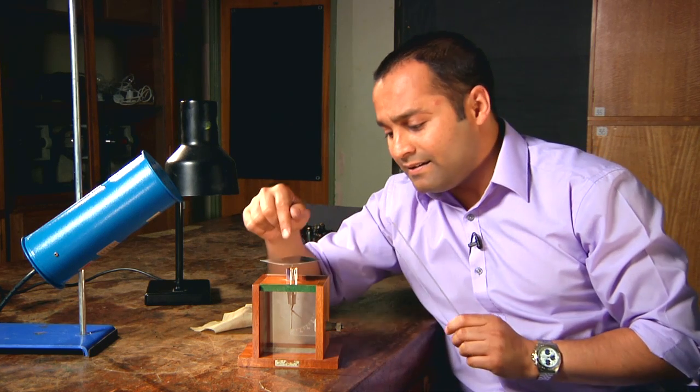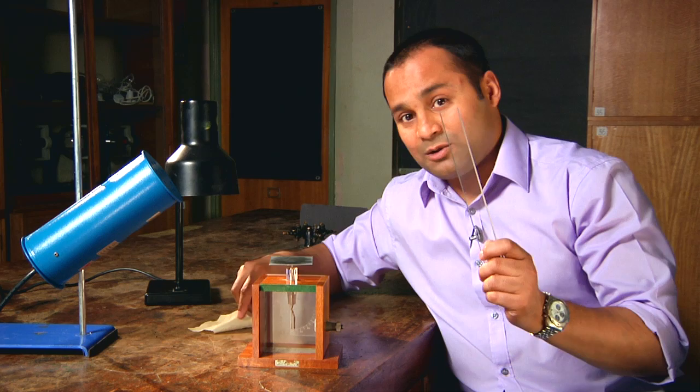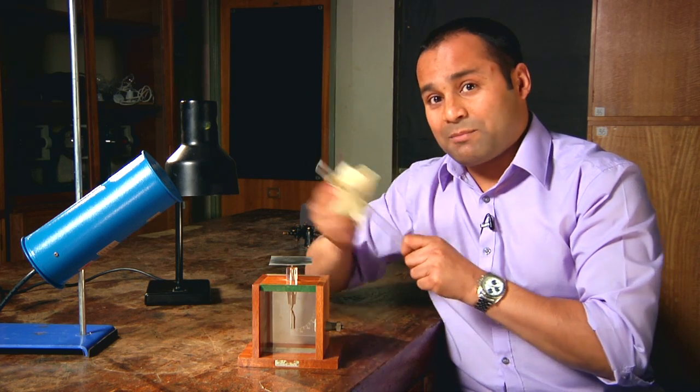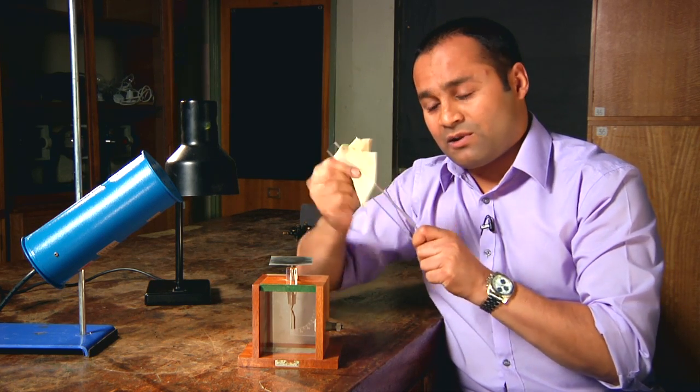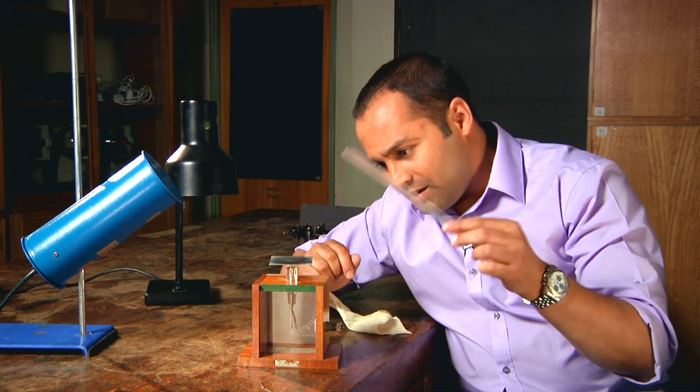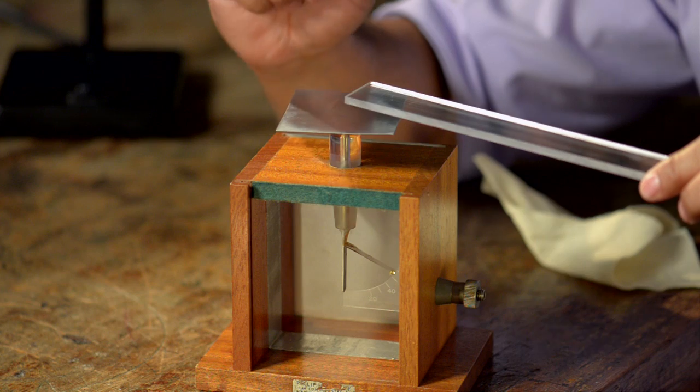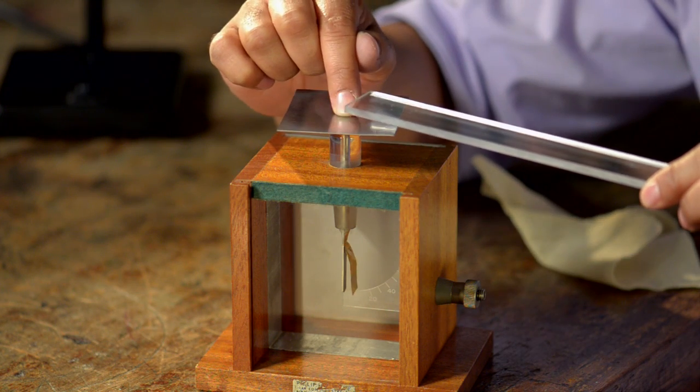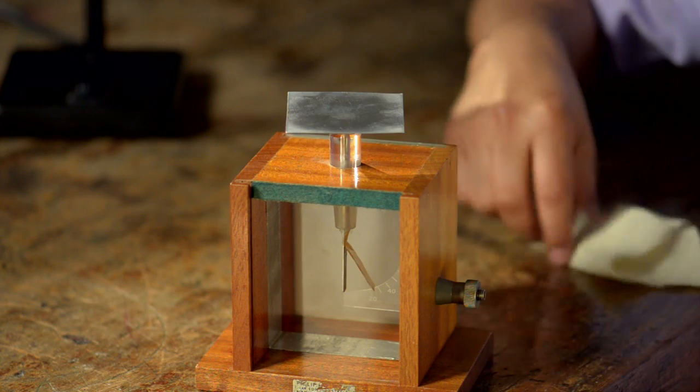Now let me show you that again. I've got a Perspex rod here, which I can make positively charged by rubbing with this bit of cloth. I bring the rod close to the plate, touch the plate with my finger, remove my finger, then remove the rod.